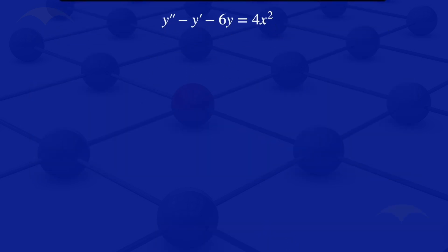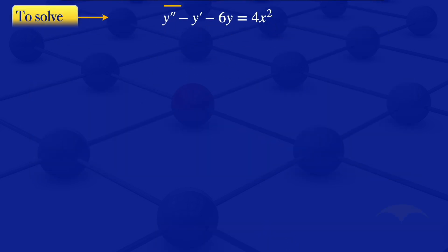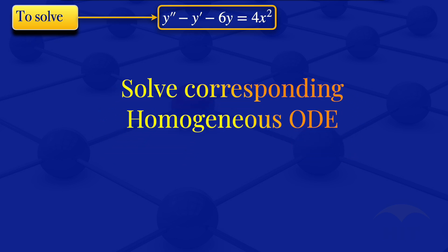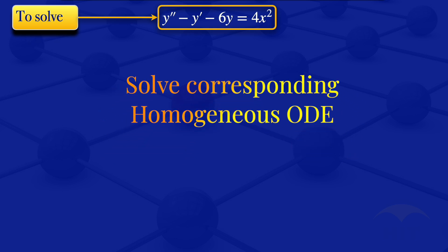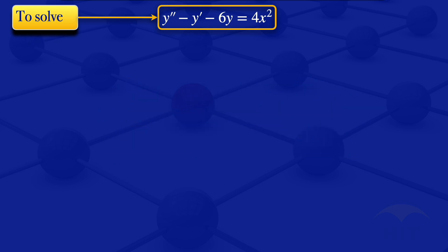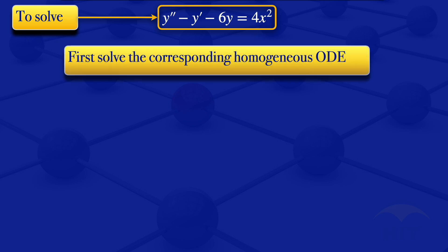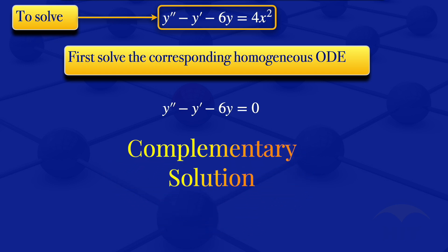Given that equation, to solve it I'll first solve the corresponding homogeneous ODE. For the corresponding homogeneous ODE, the right-hand side will be 0, so it becomes y prime prime minus y prime minus 6y equals 0. The solution we get from this is what we'll call the complementary solution.